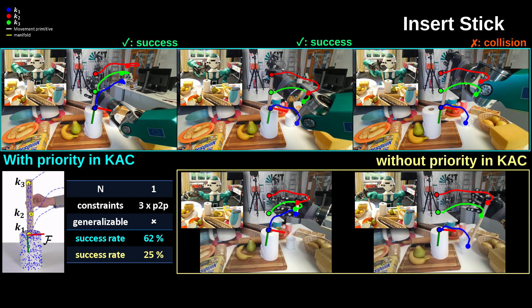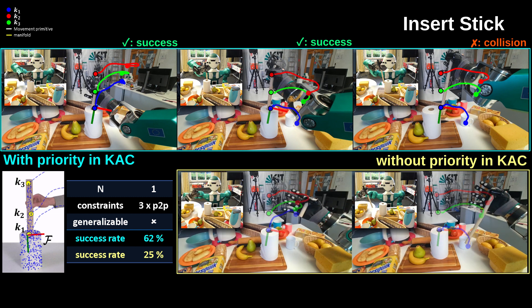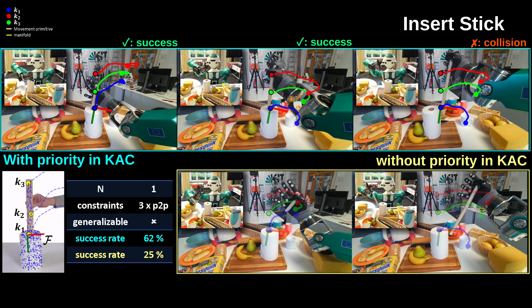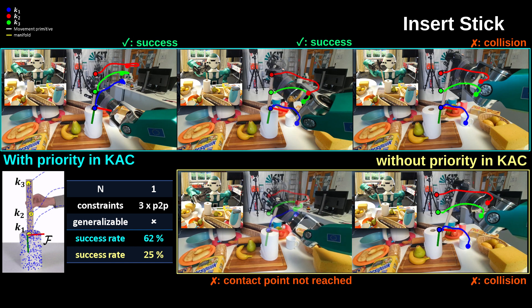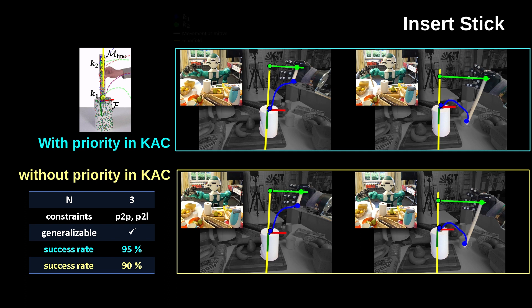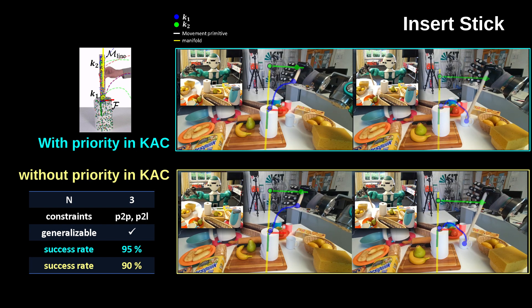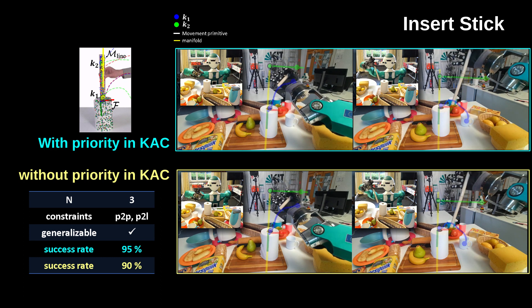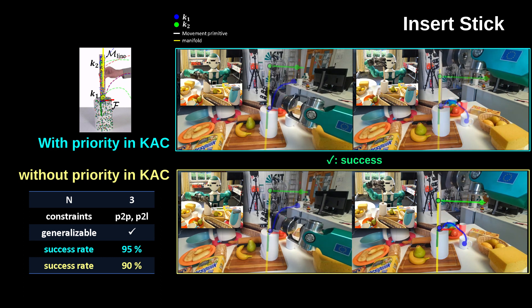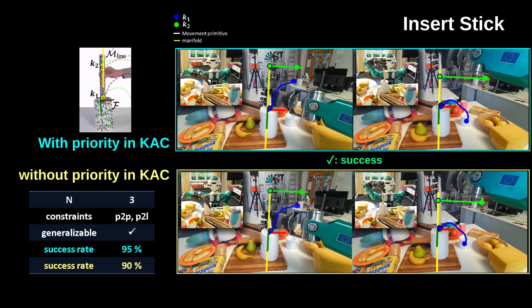If we remove the priority, the success rate drops from 62% to 25%. We also notice that the contact point on the short stick is not reached and the collision in the extra-long case is more acute. If we provide more than three demonstrations, KIVOS's task representation converges to a point-to-point and a point-to-line constraint. This also aligns with our intuition. And in fact, this also results in a very high success rate, even if without priority. However, the control accuracy and precision decrease when we remove the priority. Theoretically, KIVOS deals with arbitrary lengths of sticks with such a task representation. Therefore, it is generalizable.